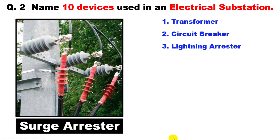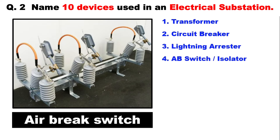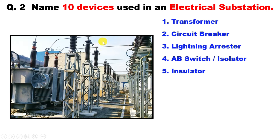Lightning arresters are also used. The work of a lightning arrester is that when there is lightning in thunderstorms, voltage suddenly increases; the lightning arrester directs this to ground. After this, an AB switch or isolator is also used. An isolator is used to cut the incoming power supply.